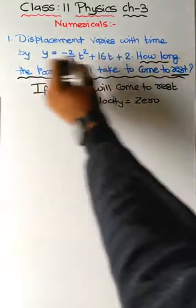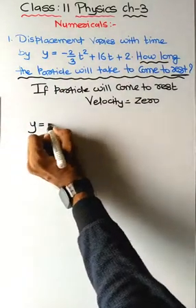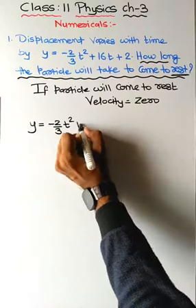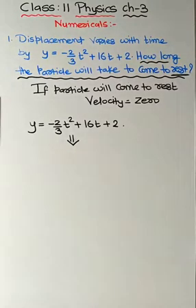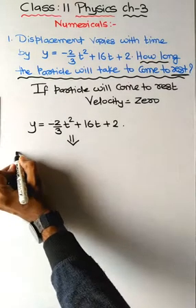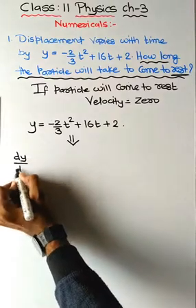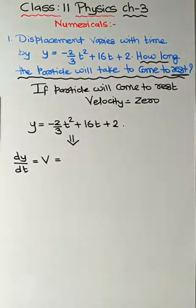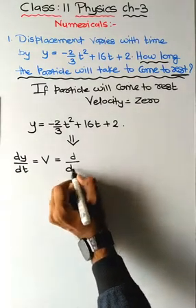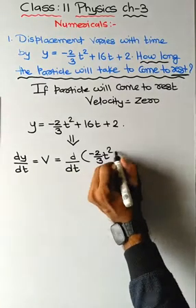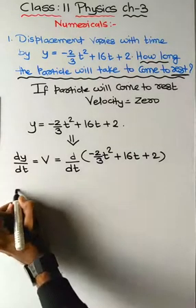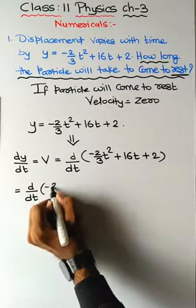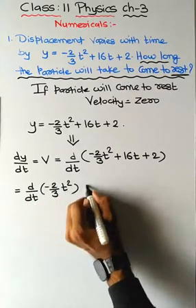To find velocity, we start from the equation y = -2/3 t² + 16t + 2. Taking differentiation of position with respect to time gives us instantaneous velocity — that is dy/dt. We apply d/dt to the whole equation. There are three different terms, so we split them accordingly and apply the differentiation formula, taking care of all minus signs and coefficients.